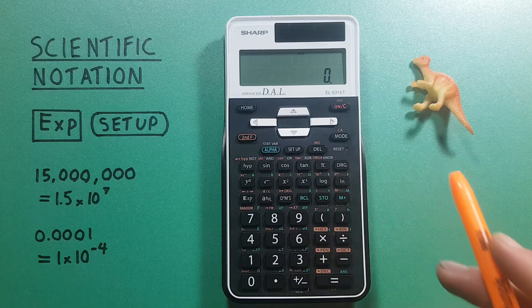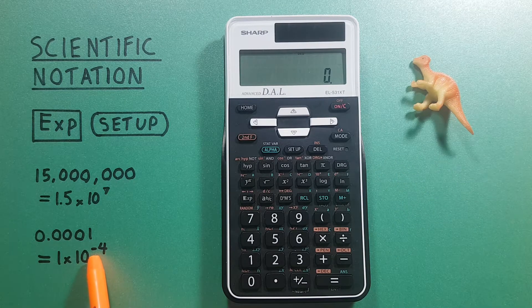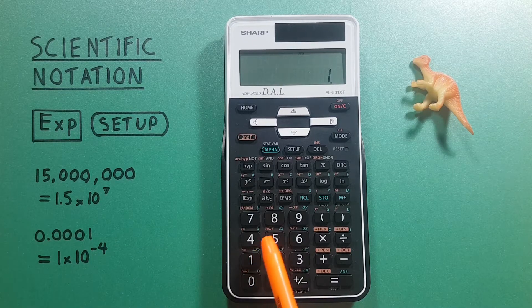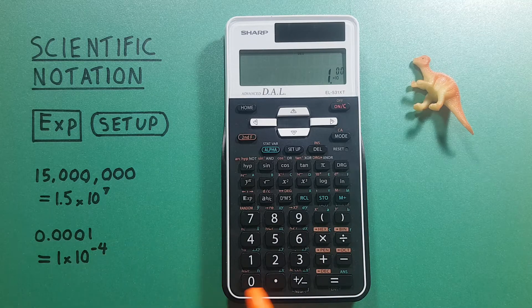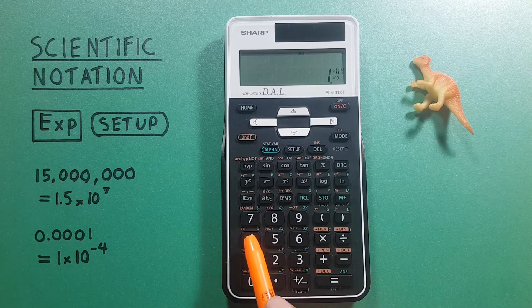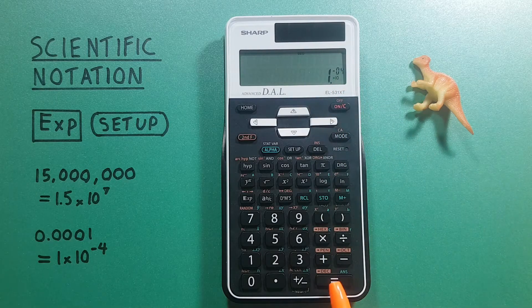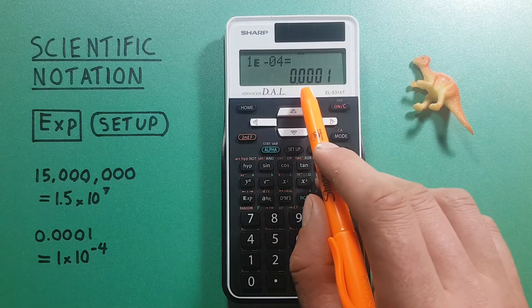This also works for small numbers. Let's say we were given this 1 times 10 to the negative fourth power. Again we enter it as 1 EXP and since it's negative power we use negative 4. There you go on the screen, 1 times 10 to the negative fourth, equals 0.0001.